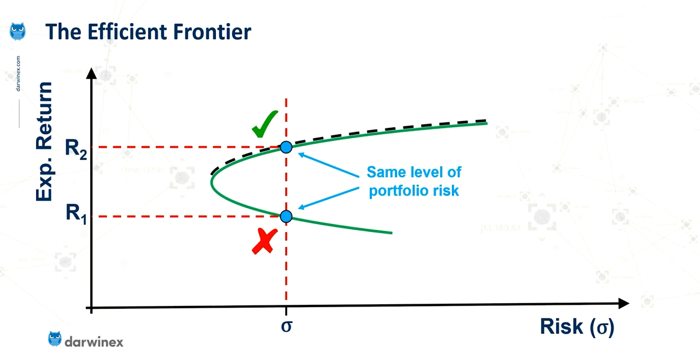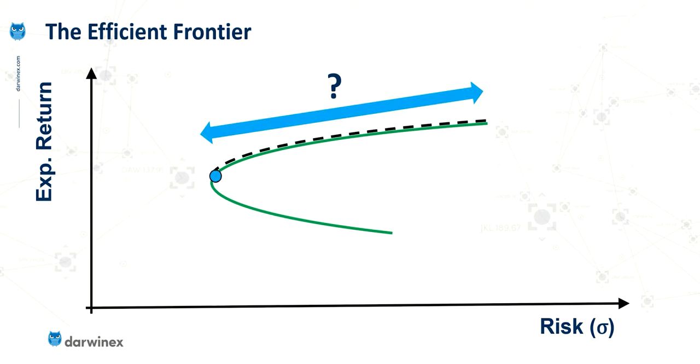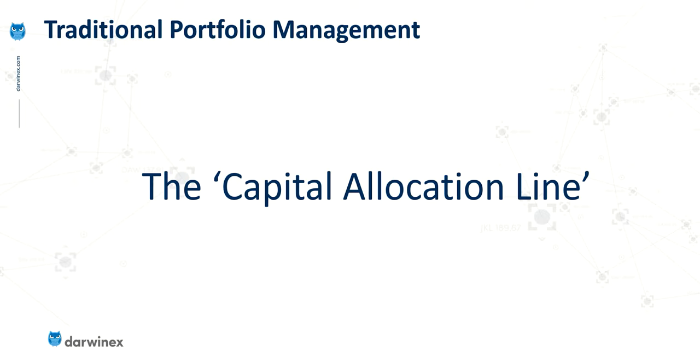But there is now a question. We might want to construct our portfolio so that it lies on the black line, the efficient frontier. But where on that black line is the best place? And one of the things that helps to answer that is what's called the capital allocation line.